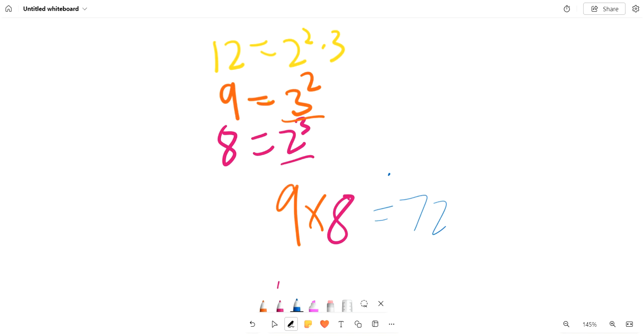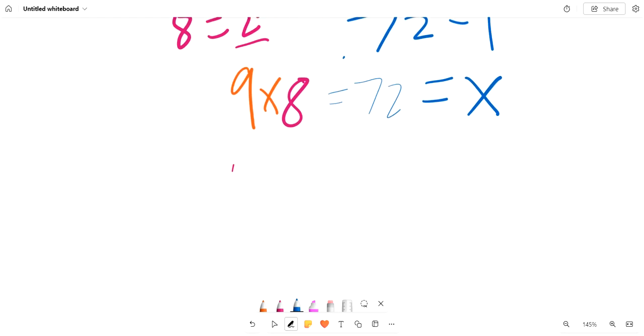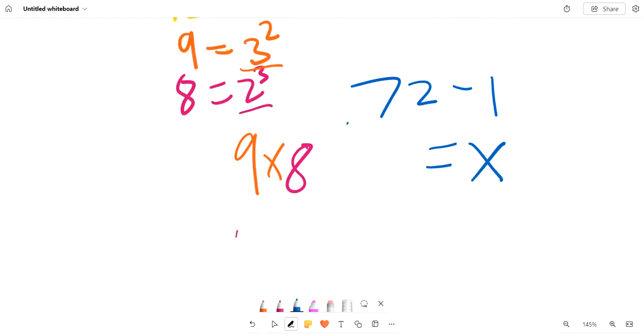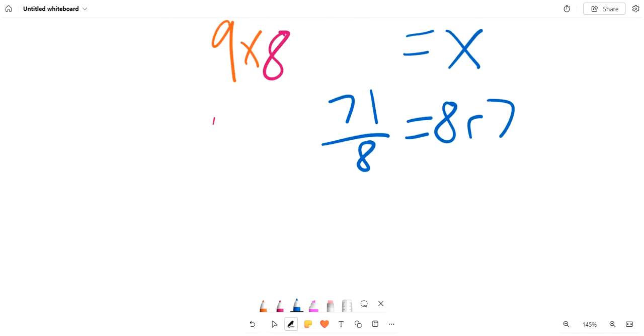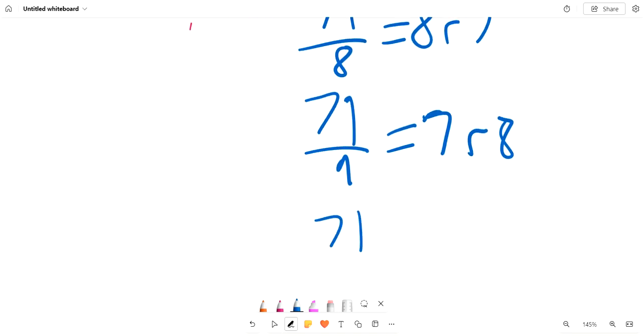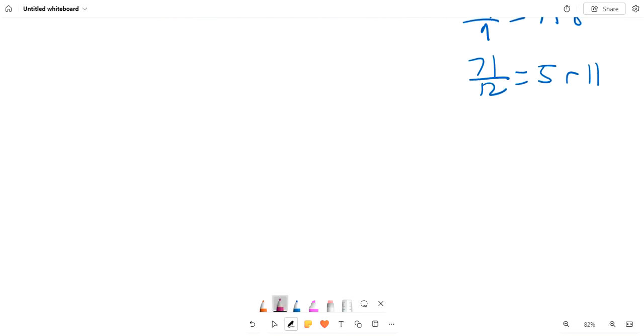From here, we can see that 72 minus 1 will be the largest integer, which is also x. So you can check this by having 71 divided by 8 equals 8 remainder 7, 71 divided by 9 equals 7 remainder 8, and 71 divided by 12 equals 5 remainder 11. So this all works, so the answer is 71.